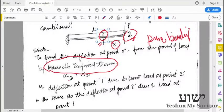By Maxwell's Reciprocal theorem, it states this is equal to alpha 2,1. This is the deflection at point 2 due to load at point 1.